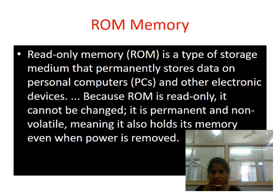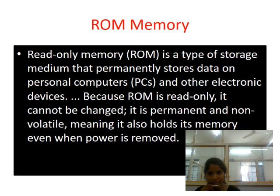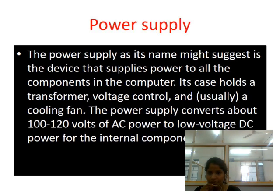There are two types of RAM: SRAM (static RAM) and DRAM (dynamic RAM). Read-only memory is a permanent, non-volatile memory. After the power is off, the data stored in ROM is retained permanently and is not destroyed or lost.